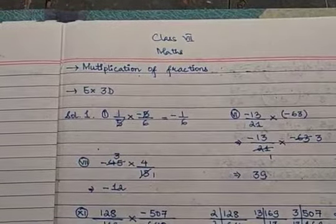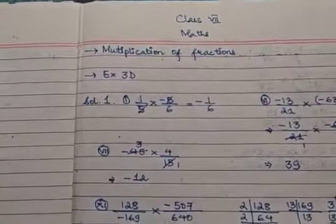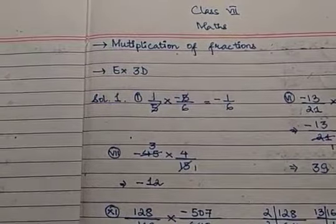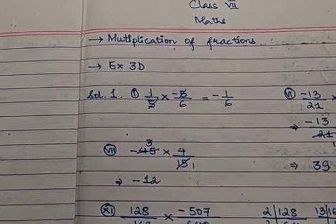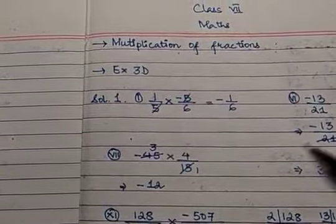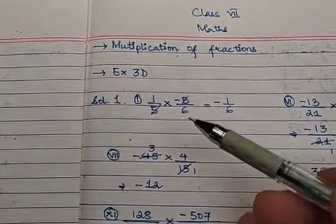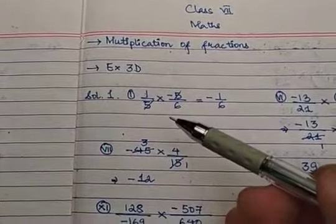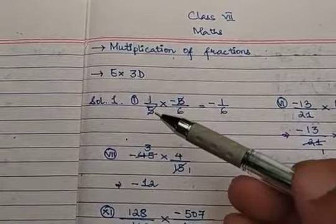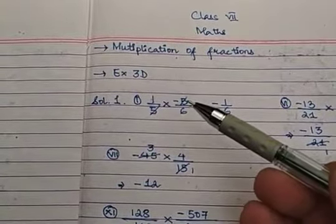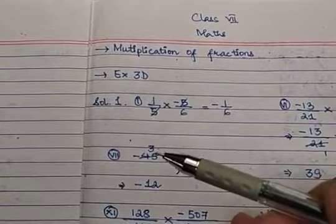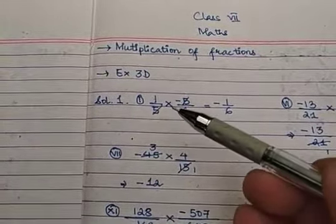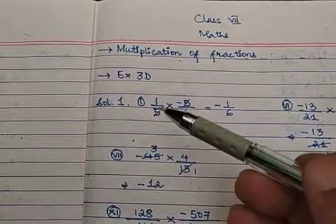The first sum in Exercise 3D, Question 1, is 1/5 into minus 5/6. Regarding multiplication of fractions, the most important thing to know is that the numerator and denominator can be cancelled across fractions connected by a multiplication sign — that is, a numerator of one fraction can cancel with the denominator of another.